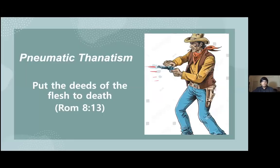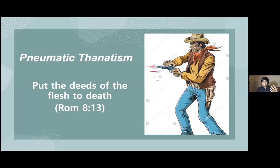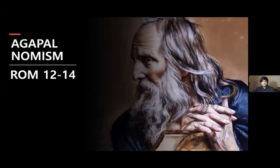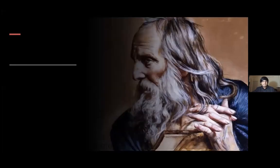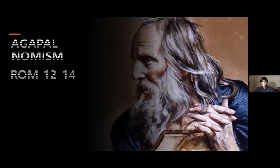We also have to put the deeds of the flesh to death in order to have this righteousness. I call this pneumatic thanatism — like a cowboy who takes a gun and shoots things down as the deeds of flesh come out of our flesh. We have to be conscious of those things and shoot down the deeds of the flesh to death. And the last concept is that we have to be led by the Spirit.